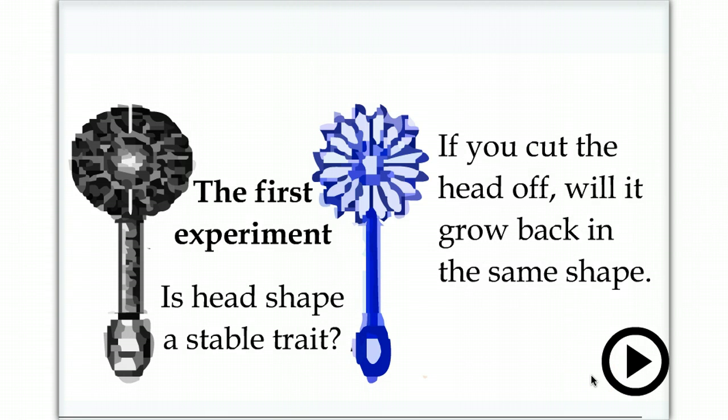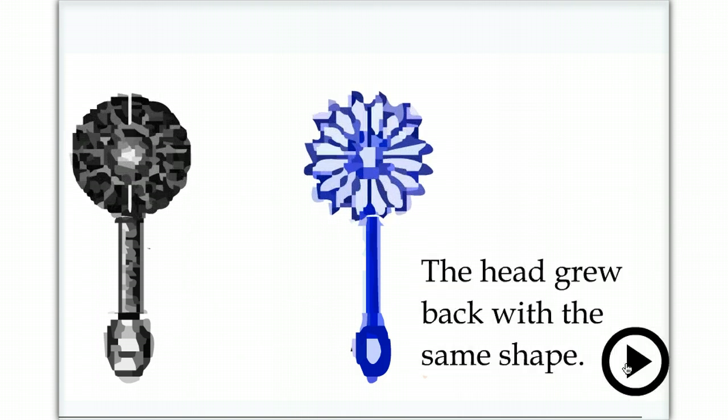First, he showed that when the head was removed, dissected away, the part of the cell that contained the nucleus would grow back and produce a head of the same shape as before.